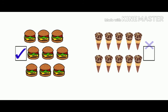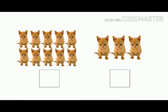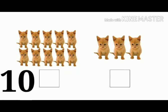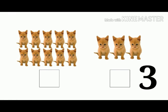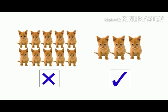Now here we can see kittens. There are ten kittens on the left side and three kittens on the right side. So we are going to put a tick mark below the three kittens on the right side and a cross mark on the left side below the ten kittens. That's it for today — I will meet you in the next video. Until then, take care, stay home, stay safe, bye!